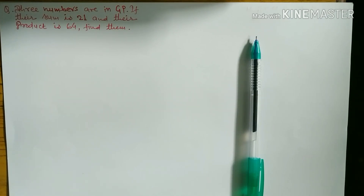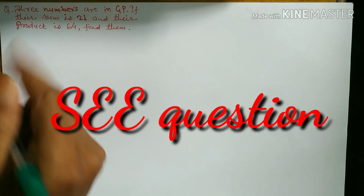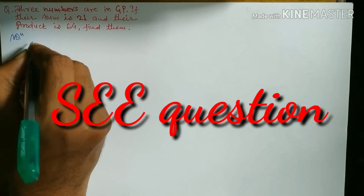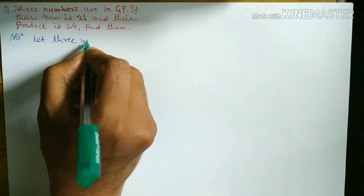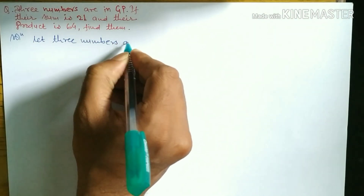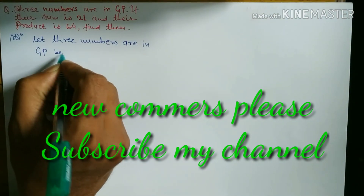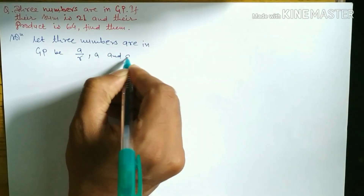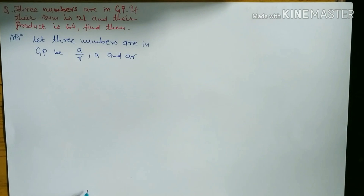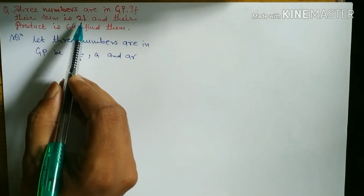First of all, since three numbers are in GP, we let the three numbers be a/r, a, and ar. So let the three numbers in GP be a/r, a, and ar. According to the question, their sum is 21 and their product is 64.